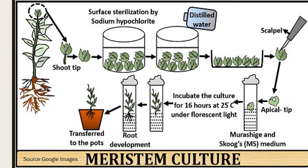After dipping, we rinse them with distilled sterilized water, changing the water multiple times. Some people also go for 70 percent alcohol dipping. Then we put them on autoclaved Petri plates containing filter papers inside the laminar flow. Everything is then carried out with the help of a scalpel — we take out the apical meristem, a one-millimeter cut part, the same way as we do with a tissue explant.